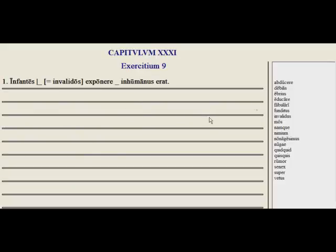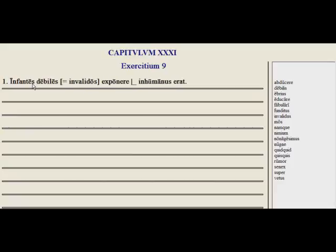Exercitium nonum — here is our vocab exercise, practice with these words in the margin. Infantes blank, exponere blank, inhumanus es, erat. To expose defenseless babies — babies that are weak — another word for invalidos was debiles — and is inhuman. We also learned the word for accustomed or habit, which was mos. Go ahead and try the rest of those and let's go on to exercise number ten.